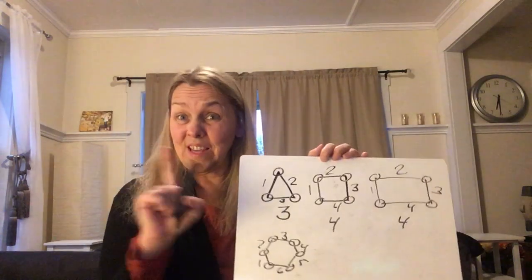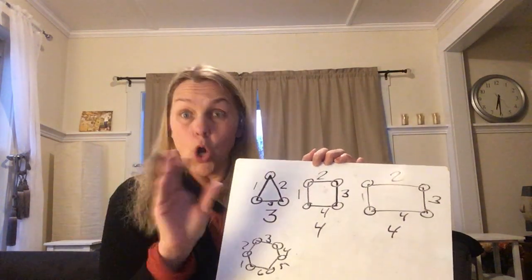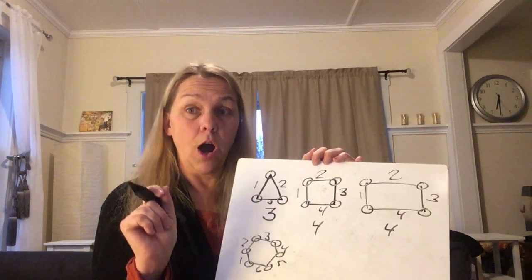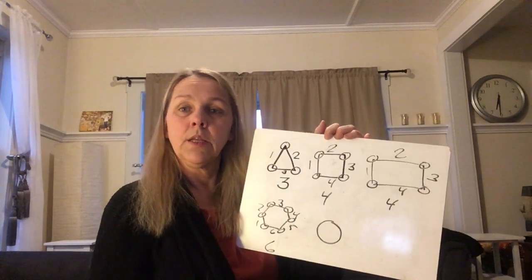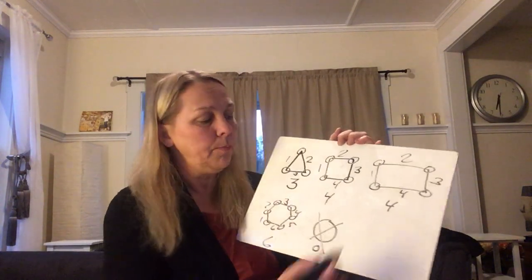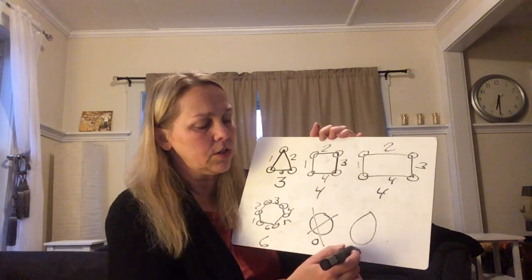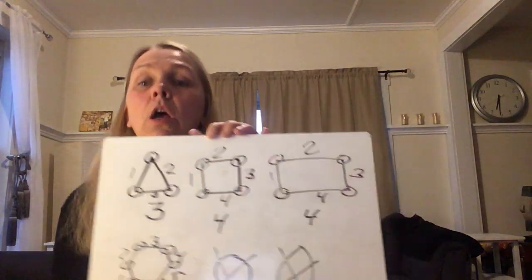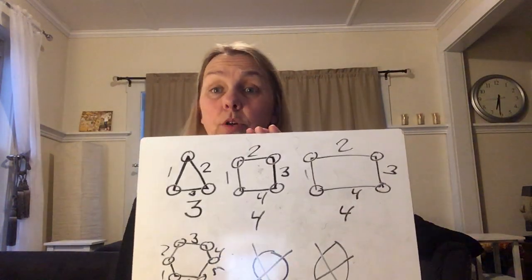And I just want to remind you that these two shapes, which we're not going to do today, do not have vertices and do not have sides. Let's see if you know what they are. The circle, that's right. That's zero. So we're not going to talk about that one today. And then there's this one. The oval also has zero. So we're not going to talk about those. Today, we're just looking at the shapes that have sides and corners or vertices.